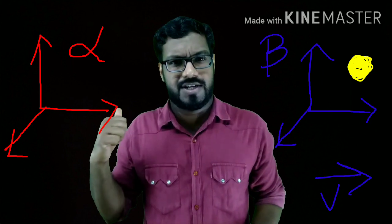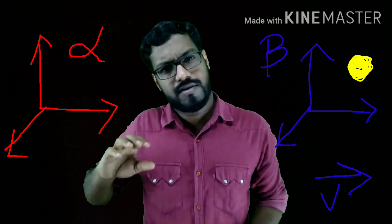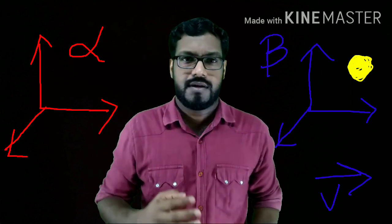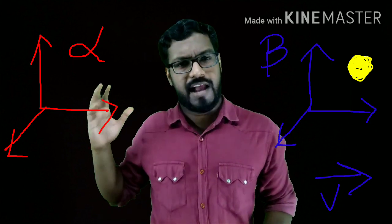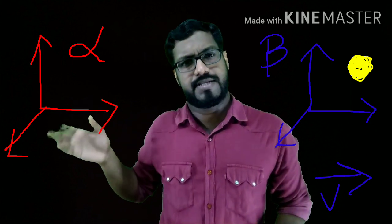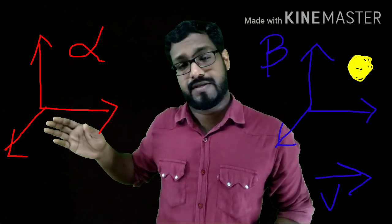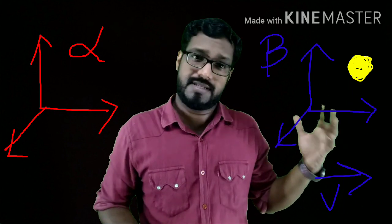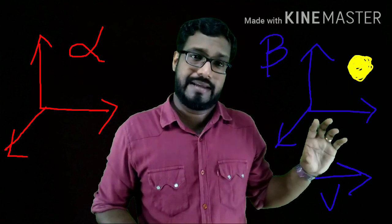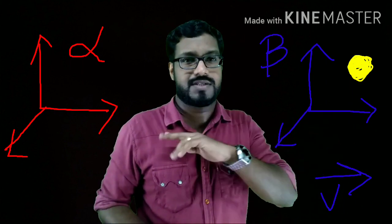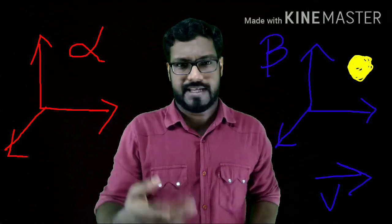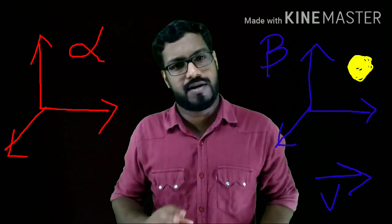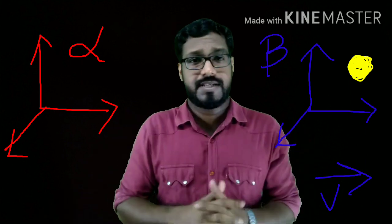Now let us look into whether a frame of reference which is moving with a constant velocity with respect to an inertial frame is an inertial frame or not. Let's take an example: a person alpha sits in an inertial frame, and a person beta sits in another frame which is moving with a constant velocity with respect to the inertial frame. This is the example in your textbook.